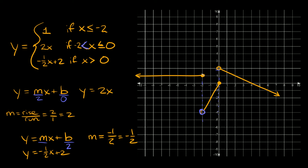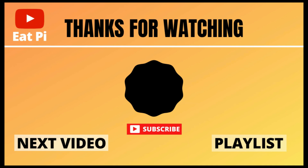One check you always want to do is make sure that wherever one line ends, the other one begins. This first line ends at negative two and the second one starts at negative two. Same thing: the second line ends at zero and the third one starts at zero. That's the check to make sure your piecewise function makes sense. If you found the video helpful, leave a thumbs up below, and if you have any questions or want to see other examples, let me know in the comments.